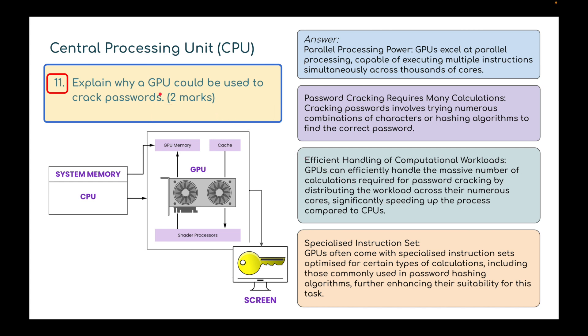Efficient handling of computational workloads: GPUs can effectively handle a massive number of calculations required for password cracking by distributing the workload across numerous cores, significantly speeding up the process compared with CPUs. Specialized instruction sets: GPUs often come with specialized instruction sets optimized for certain types of calculations, including those commonly used in password hashing algorithms, further enhancing their suitability for this task. They're a very powerful type of processing unit.